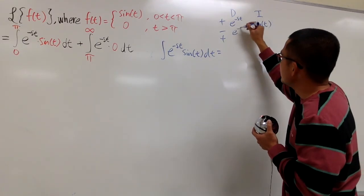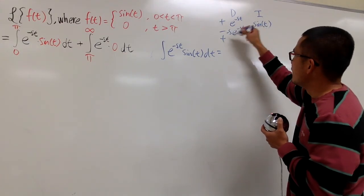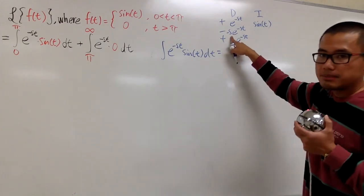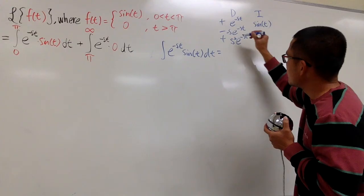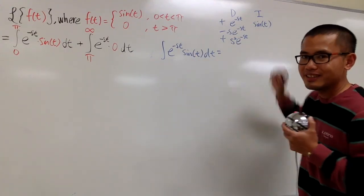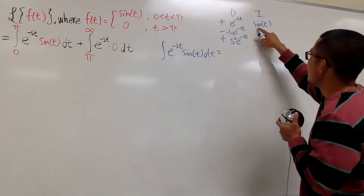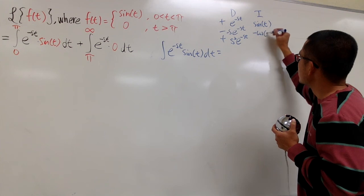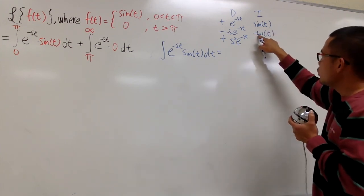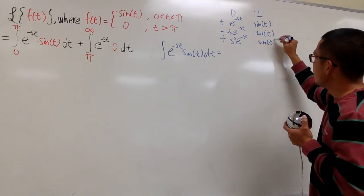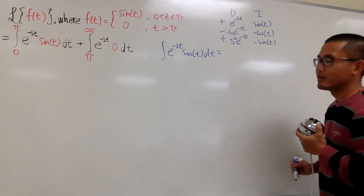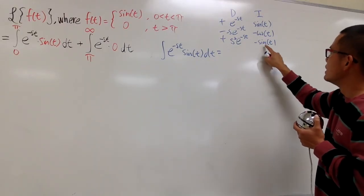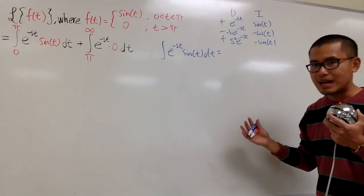Differentiating e to the negative st one time, we get e to the negative st times negative s. Differentiating again, we keep e to the negative st times s squared. Integrating sin(t) the first time gives negative cos(t), and doing it again gives negative sin(t) — maintaining that negative. We stop here because the function part, e to the negative st times sin(t), repeats from the first row.